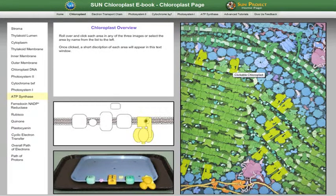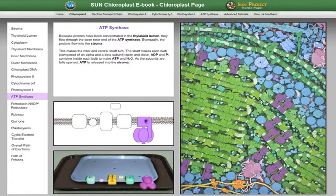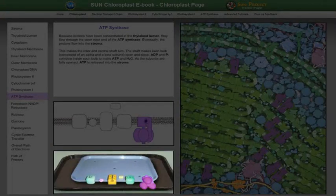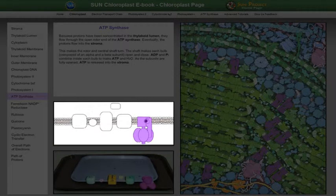You can highlight the same proteins and compartments of the chloroplast in a painting, within the Sun Project manipulatives, and in a black and white diagram.